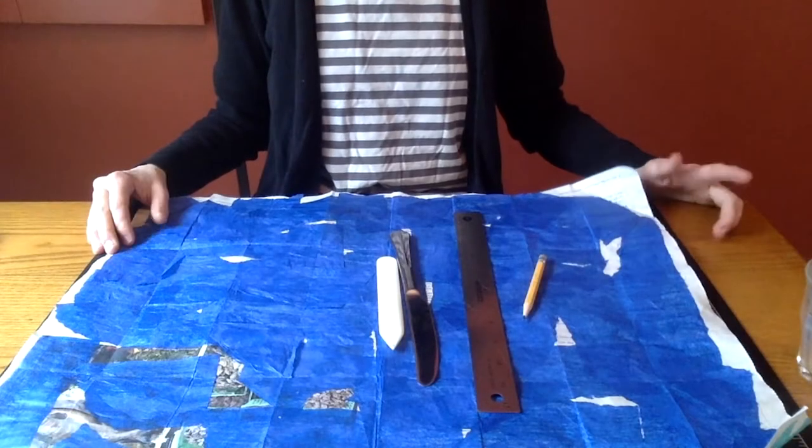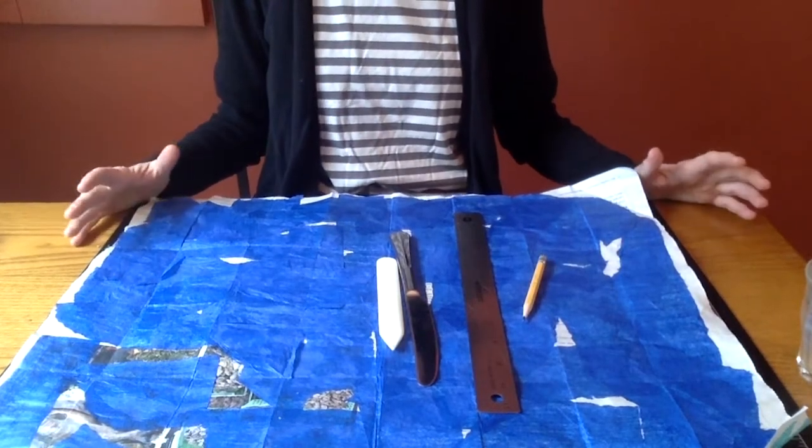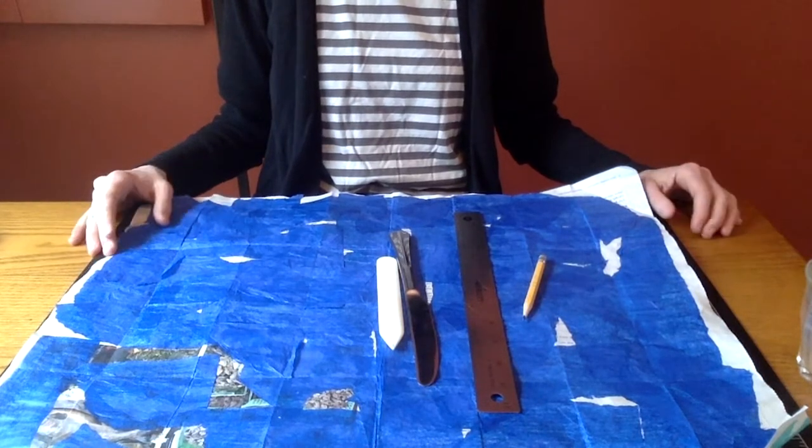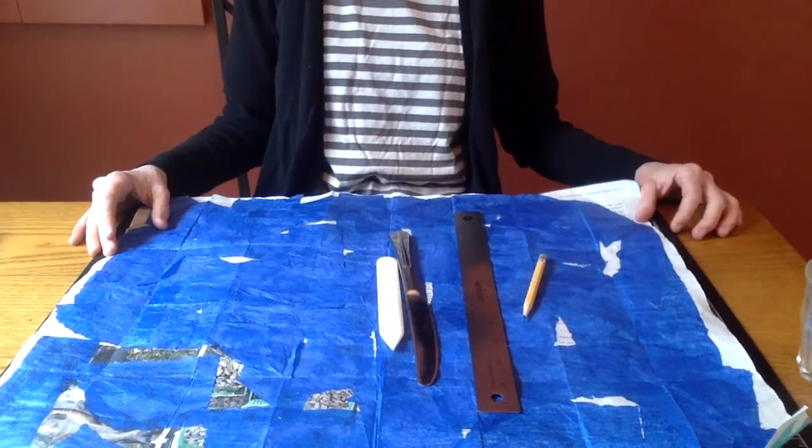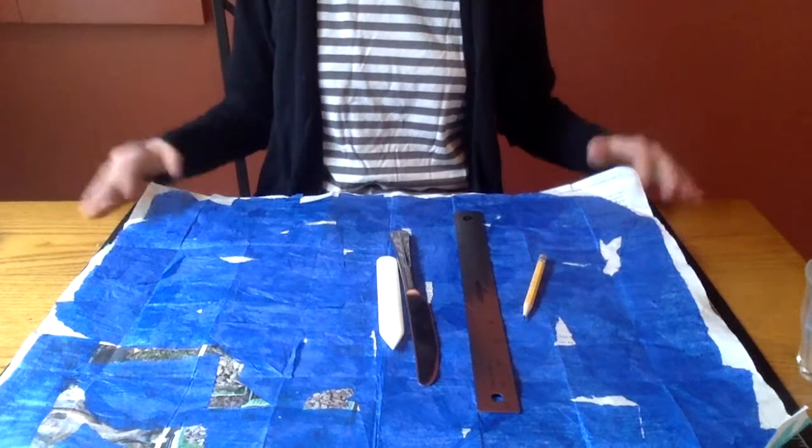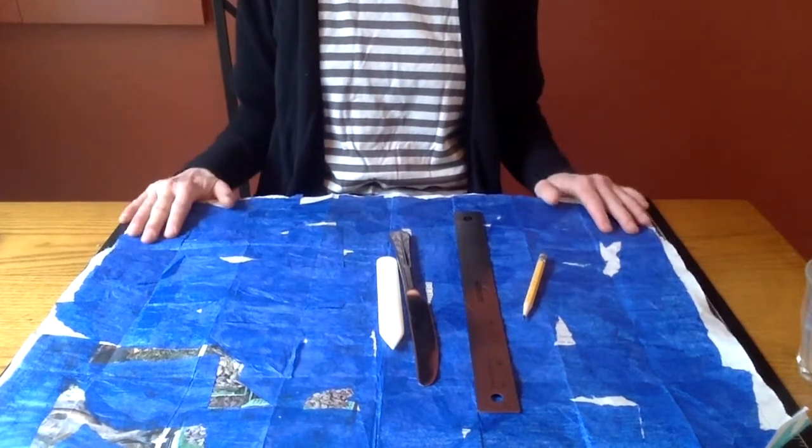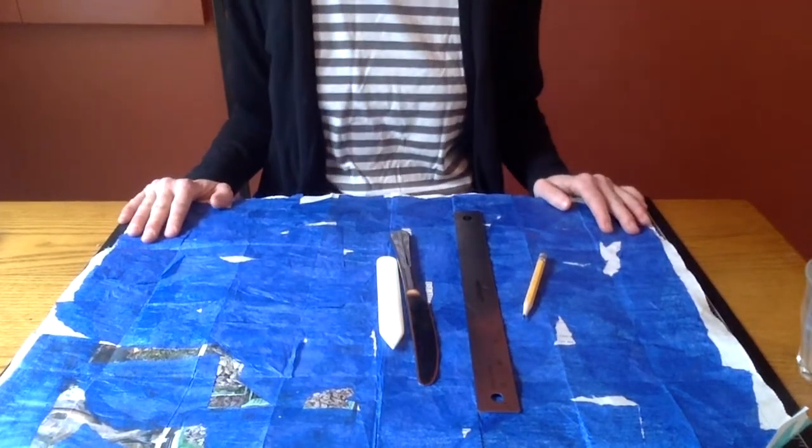Our supplies today are a pencil, a ruler, a bone folder or even a table knife, and a rectangular sheet of paper. I'm going to be using a sheet of newspaper that I've covered in tissue paper.